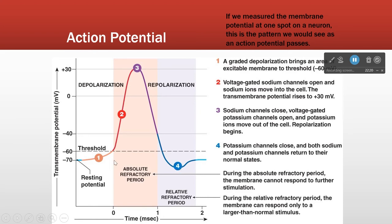That's the action potential from one location. Then this area of membrane has to repolarize — get back up to its baseline of minus 70. At number four, all the channels are closed. The further change in membrane potential is due to the sodium-potassium pump, putting things back — pumping sodium out and potassium in.